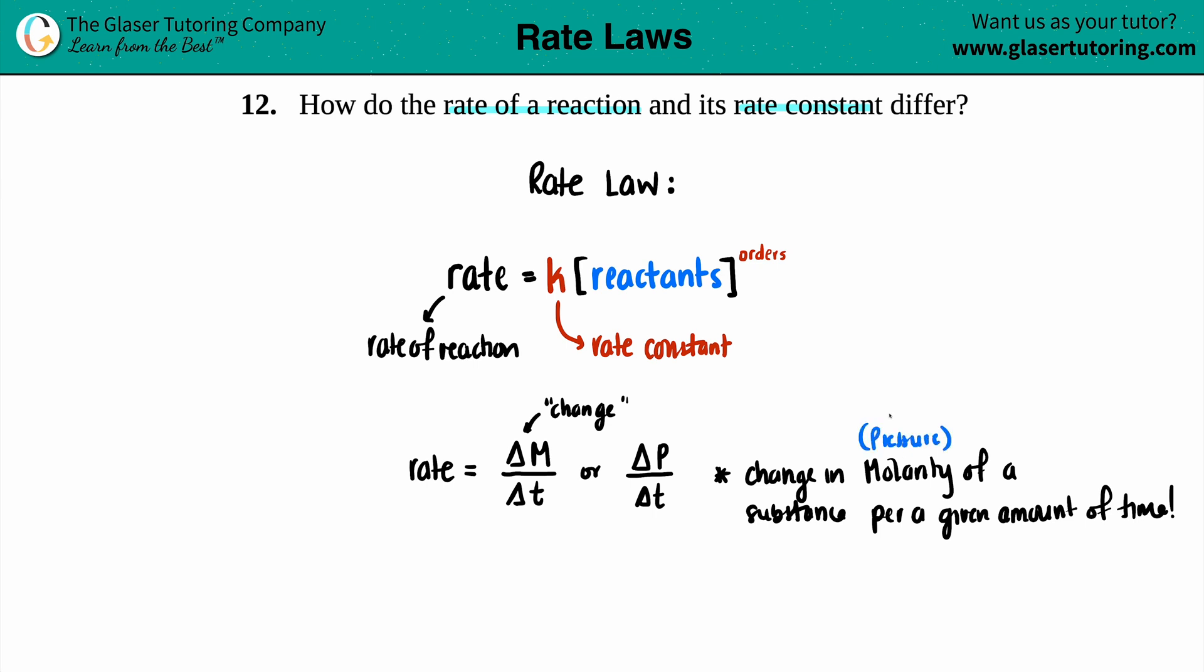Now what is a rate constant? Well it goes by literally what it means, right. A rate constant is a constant value for a given reaction. So all reactions and the reactions that you'll see in this chapter will have its own unique rate constant.